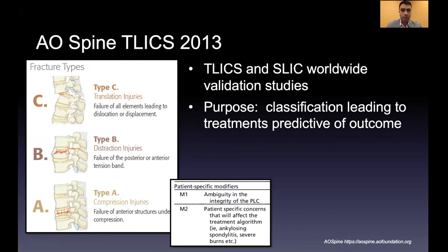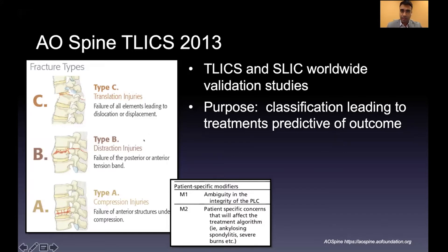Type C are fracture-dislocation injuries — these are the worst of the worst. They are always unstable and always need surgical intervention. The goal of these classification systems is to reduce heterogeneity in how we describe, research, and treat traumatic spine injuries.